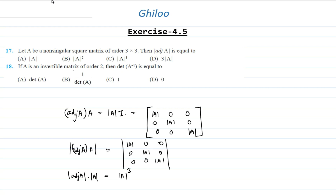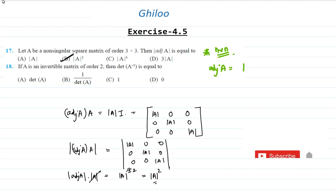Determinant of A and determinant of A cubed will cancel to leave determinant of A squared. So we get determinant of adjoint of A equals determinant of A whole squared, when the matrix is of order 3 by 3. In general, if the matrix is of order n by n, then determinant of adjoint of A equals determinant of A to the power n minus 1.